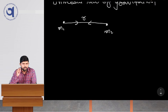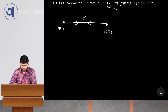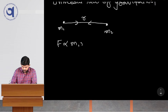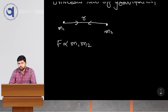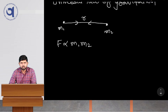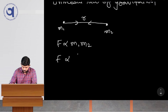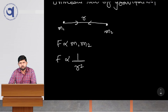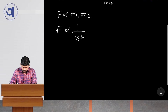It is found experimentally that this force is proportional to the product of these two masses, so we can write F is proportional to M1 times M2. It is also found that this force is inversely proportional to the square of the distance between them. Collectively we can write: force is proportional to M1 M2 divided by R squared.